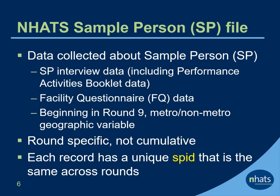The NHATS sample person or SP file includes information about the sample person. The file includes data from the SP interview, including data from the performance activities booklet, and the facilities questionnaire or FQ data. Beginning in round nine, the file also includes an indicator of whether the SP lives in a metro or non-metro area. In prior rounds, this variable is provided in a separate file that is now included in the annual zip package.